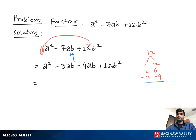From the first pair, we take a as common: a(a - 3b). From the second pair, we take -4b as common: -4b(a - 3b).